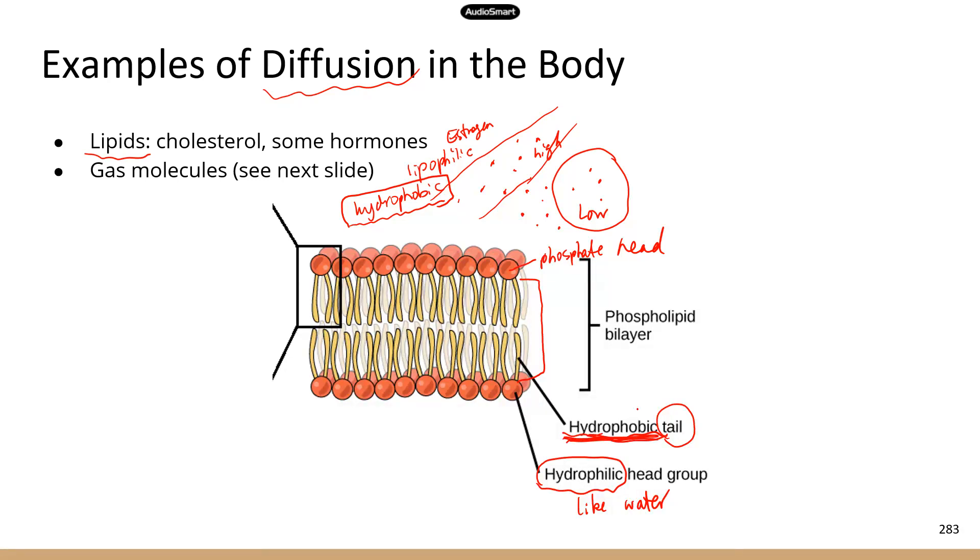They prefer hydrophobic molecules that are just like them. So for cholesterol, for lipid-based hormones, they can cross the cell membrane very easily. So their transport into the cell is just based on simple diffusion.